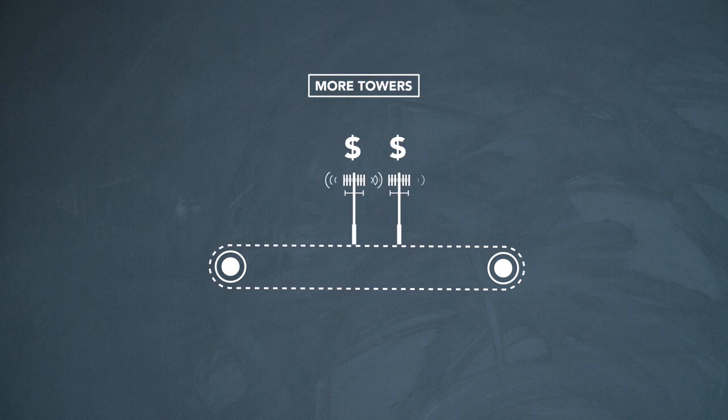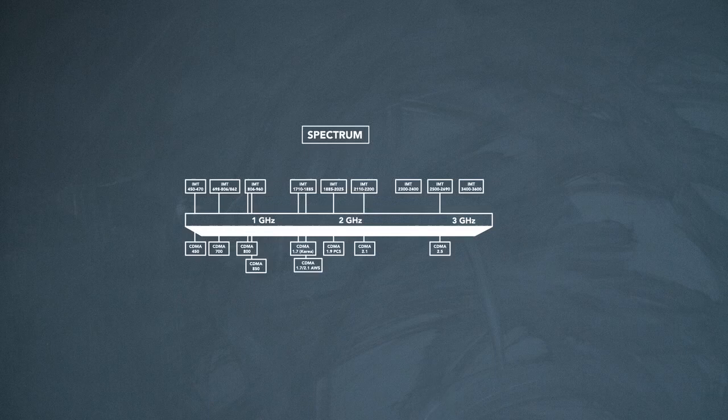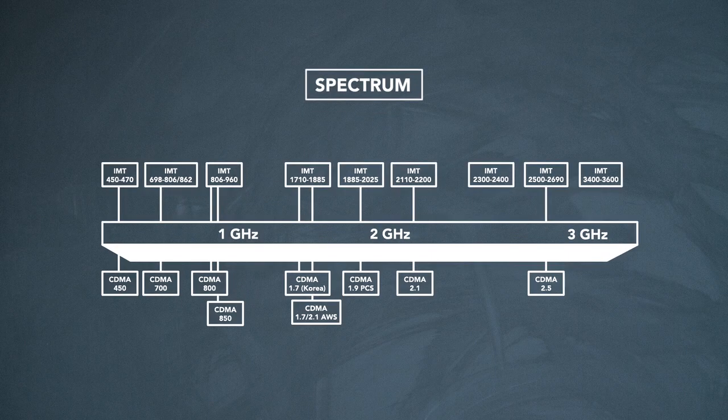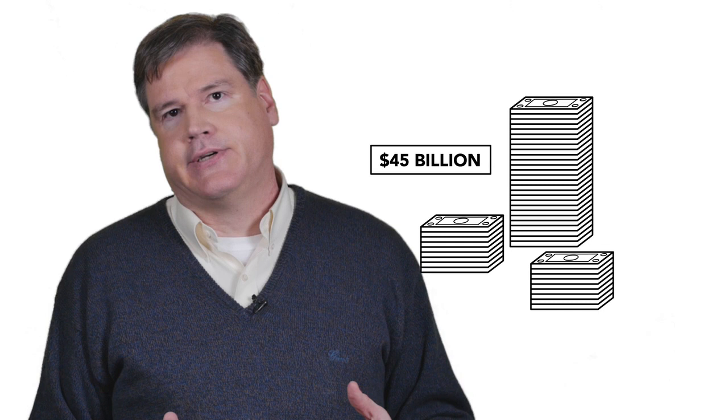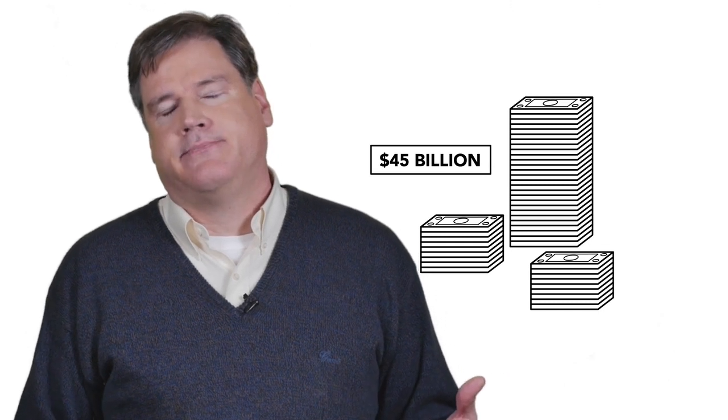Which leads to our second degree of freedom which is, well let's find more spectrum. Let's allocate more spectrum to the cellular network and certainly that is another option. Also an expensive one. In fact in the United States we just finished the latest spectrum auction in which 45 billion dollars were spent by mobile network operators in this country just on additional spectrum.